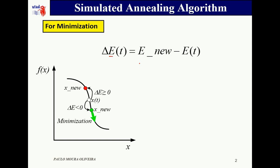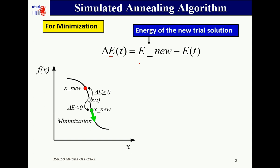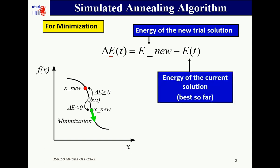E_new represents the energy of the new trial solution and E(t) represents the energy of the current solution. We can call this the best so far solution. It is very important to evaluate this difference in this order because if you switch the order you get completely different results.